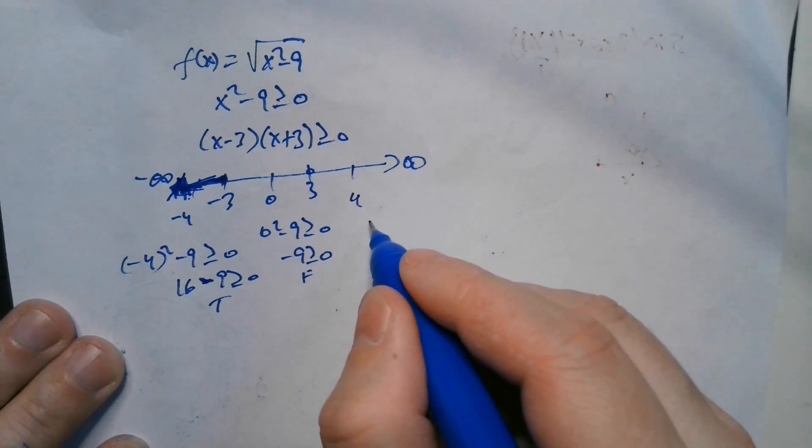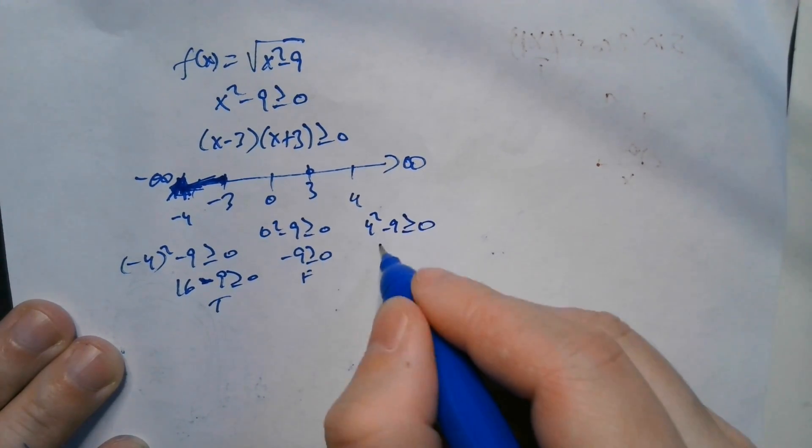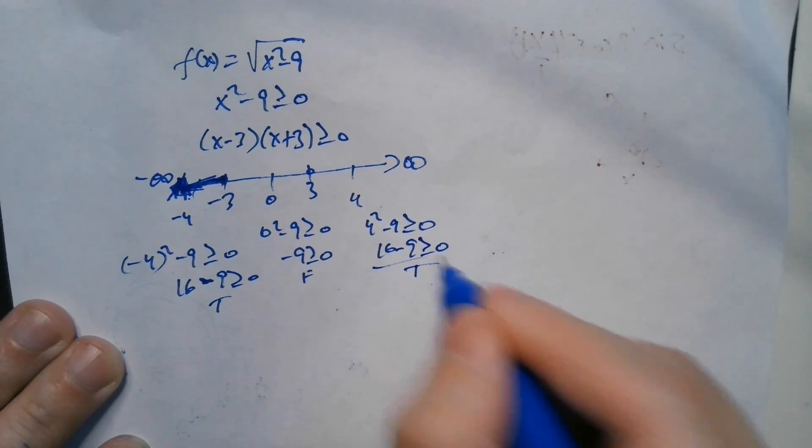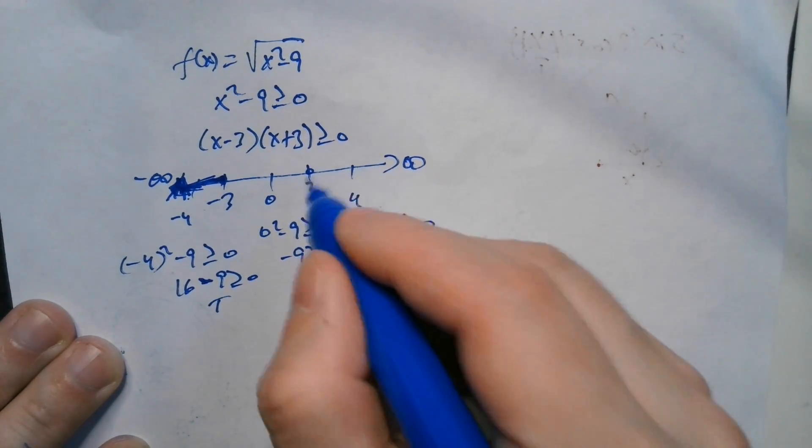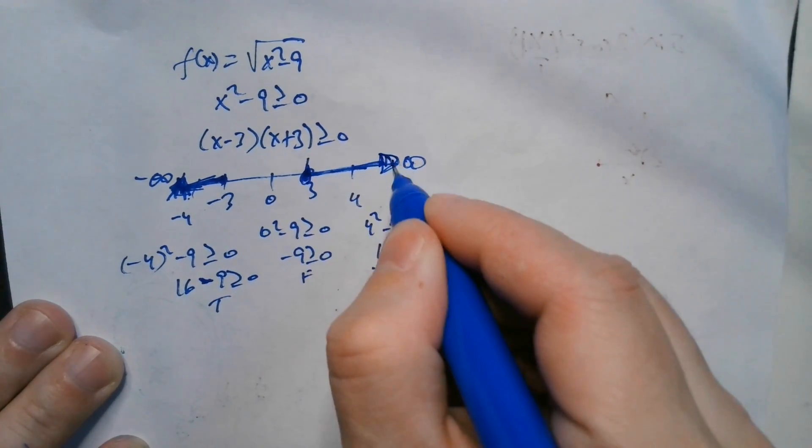And then you choose 4, for example. So 4 squared minus 9, is this greater than or equal to 0? So this is 16 minus 9, is this greater than or equal to 0? That's certainly true. The number itself doesn't matter. So it means everything from positive 3 to positive infinity also works.